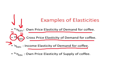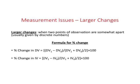On the supply side, we will just look at one elasticity. The independent variable is price per cup of coffee and the dependent variable is quantity supplied of coffee. This will be read as own price elasticity of supply for coffee.